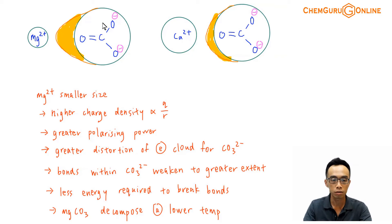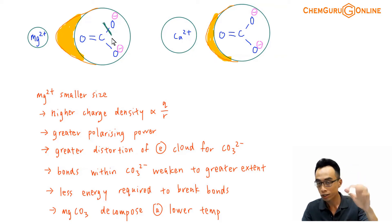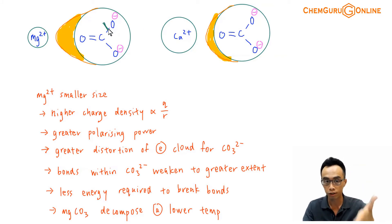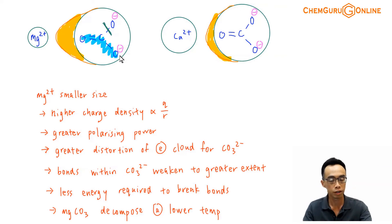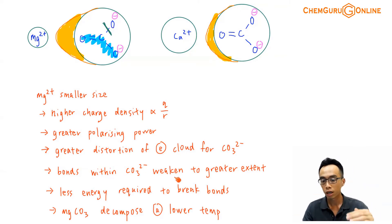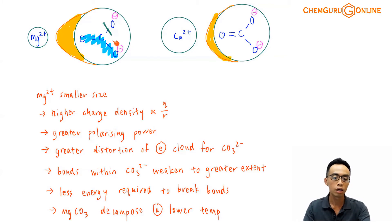If the bonds are weakened to a bigger extent, it will be easier to break the bonds within the carbonate. When this bond breaks, decomposition takes place, giving MgO and CO2. When one of the C-O bonds breaks, CO2 is released and you are left with the oxide. So this is the reason why decomposition of group 2 metal carbonates gives the oxide plus CO2 gas. Since the bonds within MgCO3 are weakened to a bigger extent, less energy is required to decompose it, so MgCO3 decomposes at a lower temperature.